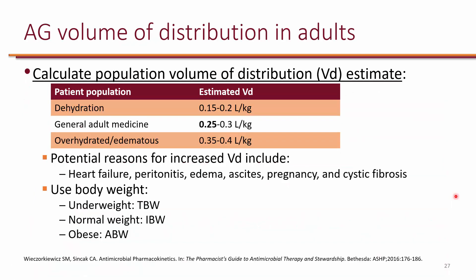Once you assess the patient's body weight and creatinine clearance, the next step is to calculate the population volume of distribution. By population, we mean these numbers are derived from population studies, so they are an estimate of what it would be in your patient. Because aminoglycosides are hydrophilic, they distribute primarily in the extracellular fluid, so fluid status is extremely important. In someone with normal fluid status, the estimated volume of distribution is about 0.25 liters per kilogram.